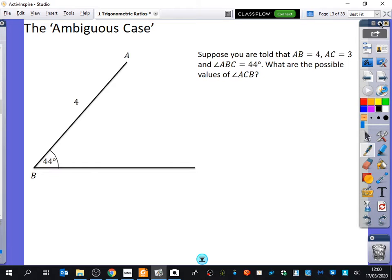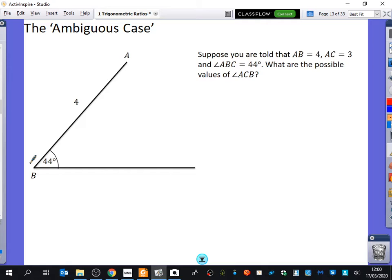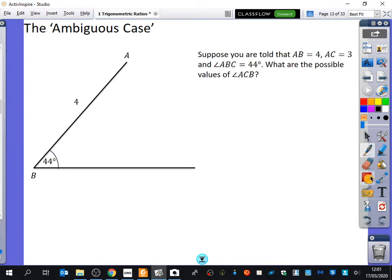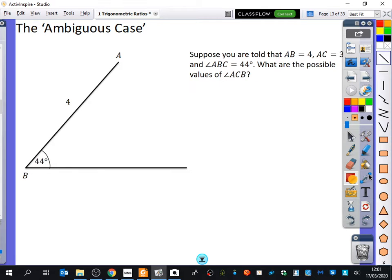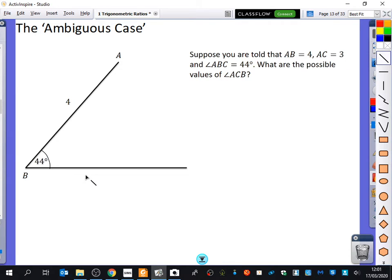So I've said here, suppose that you are told that AB is equal to 4, AC is equal to 3, and the angle ABC is 44 degrees. What are the possible values of angle ACB? When you look at this particular drawing, I need to think about where I'm going to place C. So C has got to lie somewhere along this bottom bit, because we've been told that the angle ABC is 44 degrees.